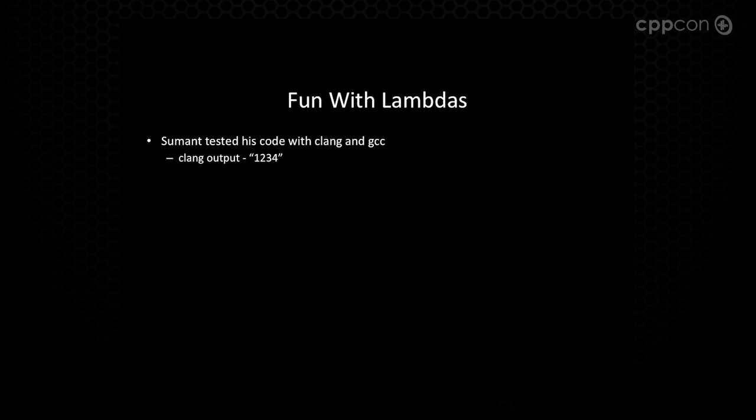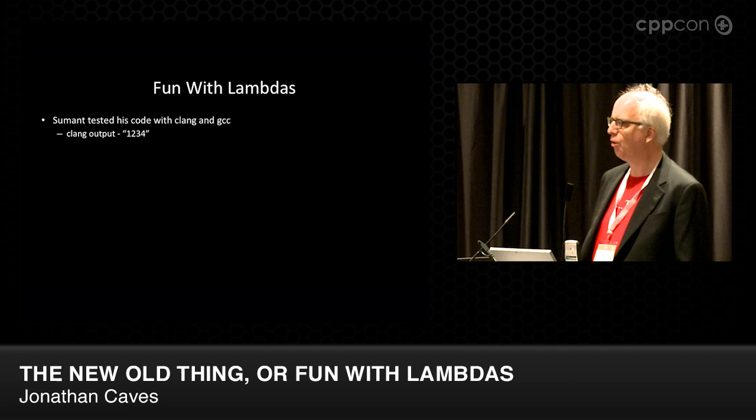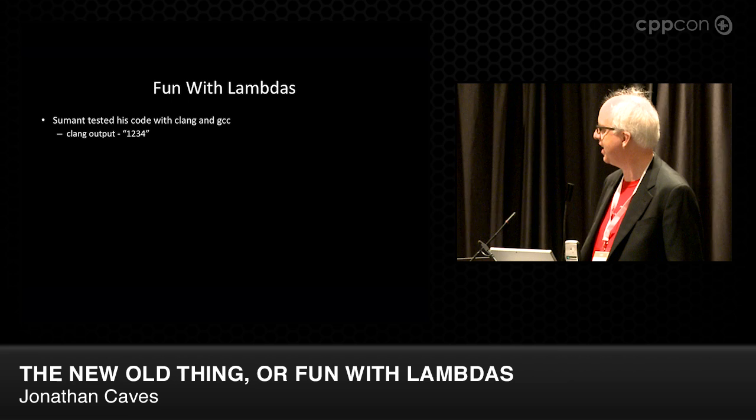Sumant in his blog posted that he tried the example with Clang. And as you'd expect from seeing the code, the output is 1, 2, 3, 4. He tried it with GCC, and he got 4, 3, 2, 1. Now, as we all know, there are no bugs in Clang. It's obvious that GCC is the one with the bug. And that's what he said in his blog.